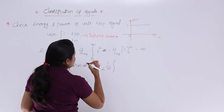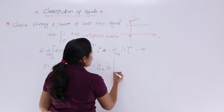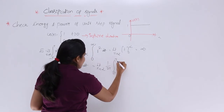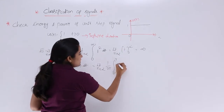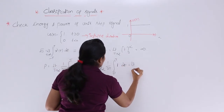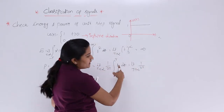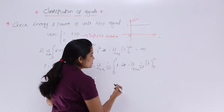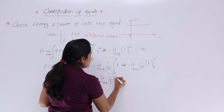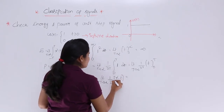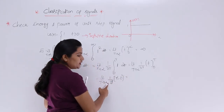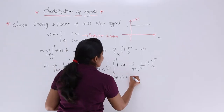Substituting the values: limit T → ∞ of (1/2T), with limits 0 to T, and x(t) = 1, so x²(t) = 1. Integrating 1 dt gives t, and applying the limits 0 to T gives T. So the expression becomes limit T → ∞ of (1/2T) × (T − 0). The T in the numerator and the T in the denominator cancel out, and the limit of T → ∞ vanishes, leaving only 1/2.